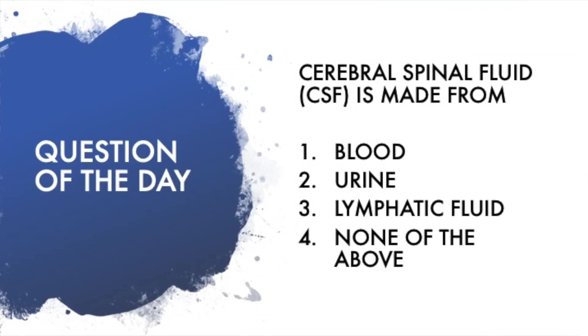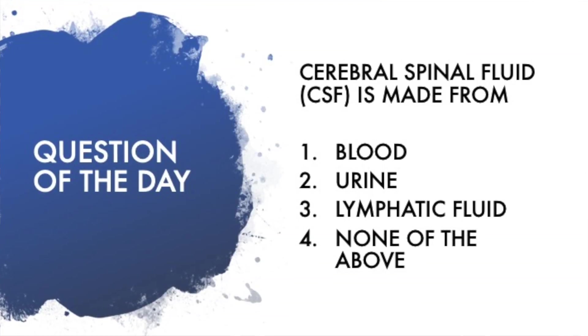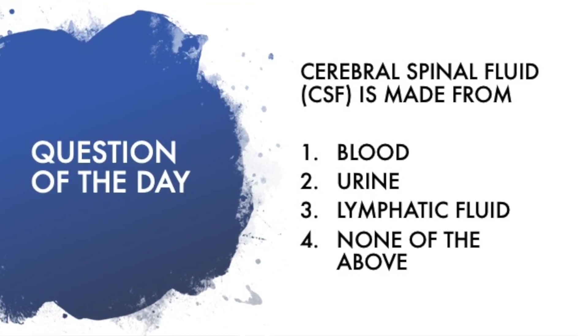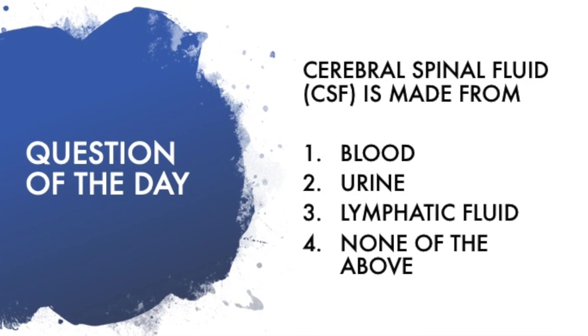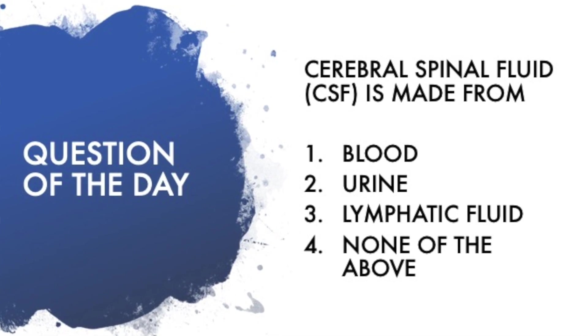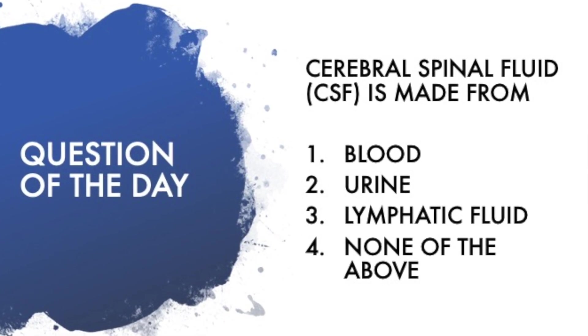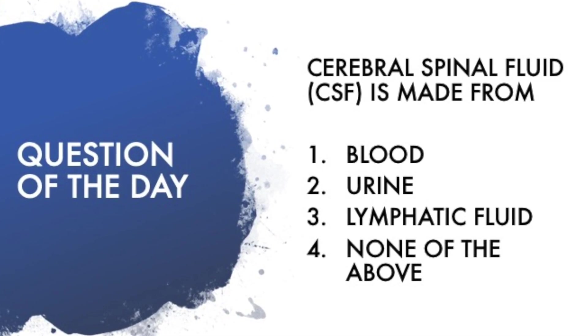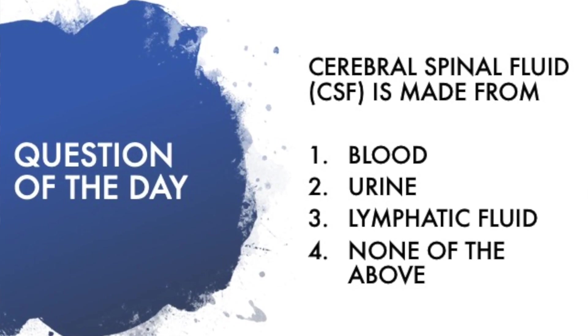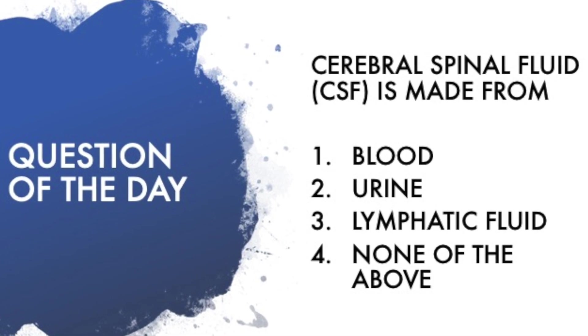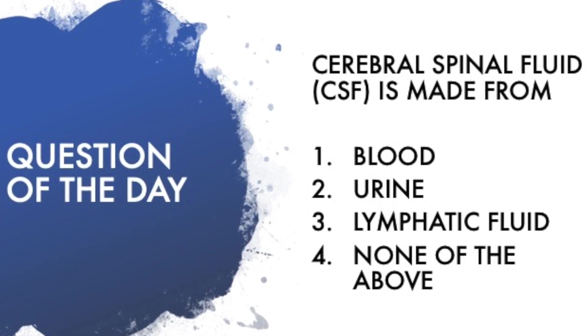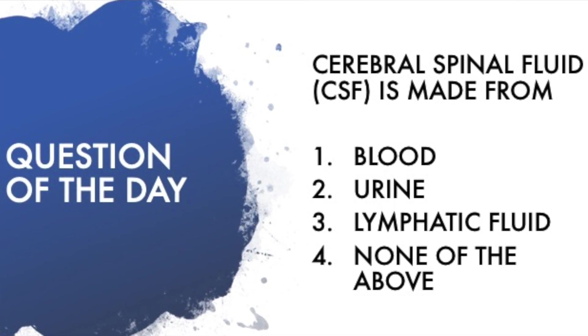Question of the day: Cerebral spinal fluid, or CSF, is made from: 1. Blood, 2. Urine, 3. Lymphatic fluid, or 4. None of the above. Stay tuned to the end of the video to learn the answer.